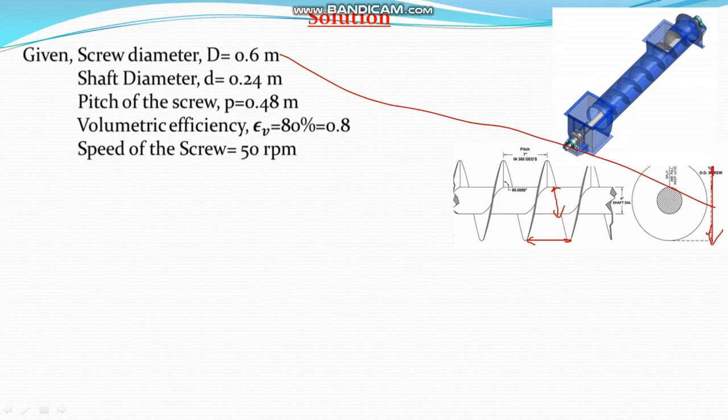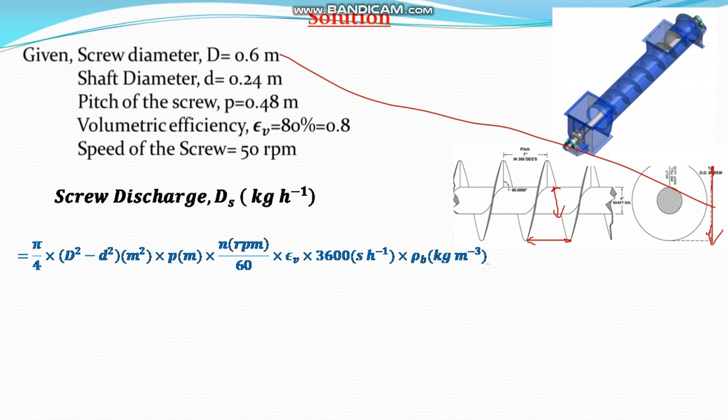We have to use in the solution. The speed of the screw is given 50 rpm. Let us take the very simple formula for the capacity of the screw conveyor. The screw discharge or Ds in kg per hour that will be equal to the volume that is inside the conveyor.